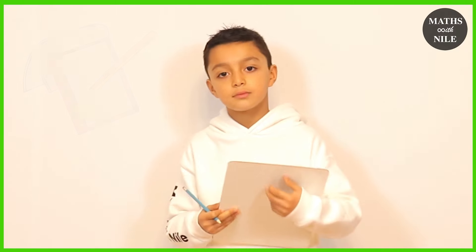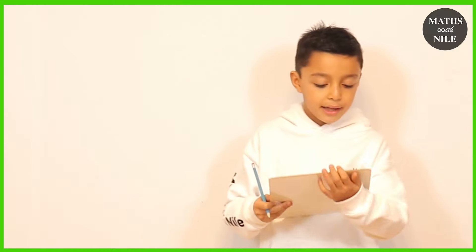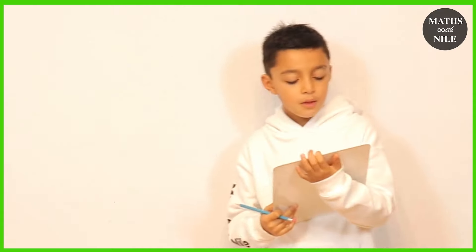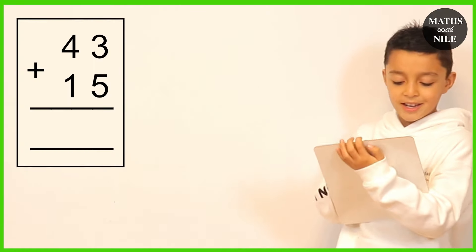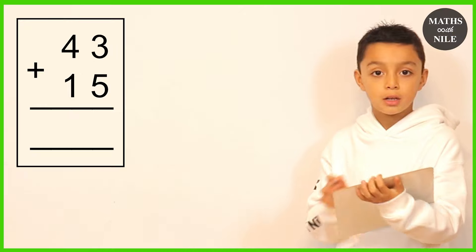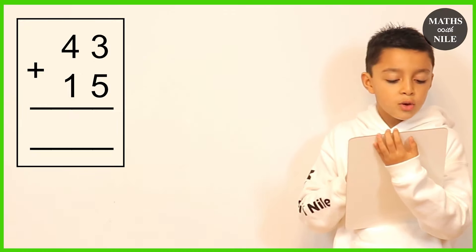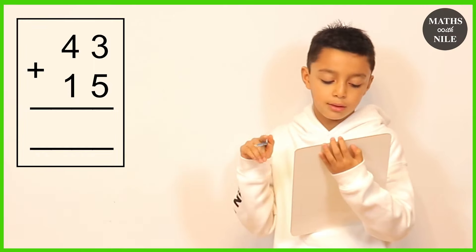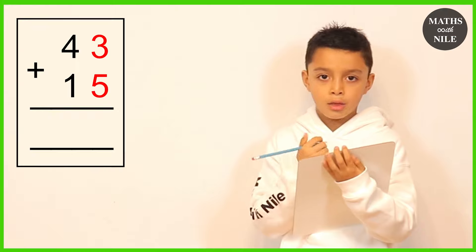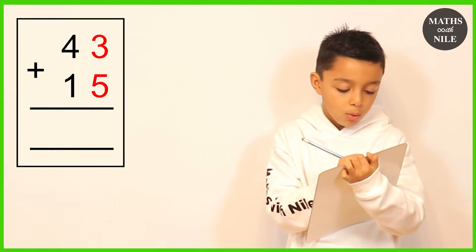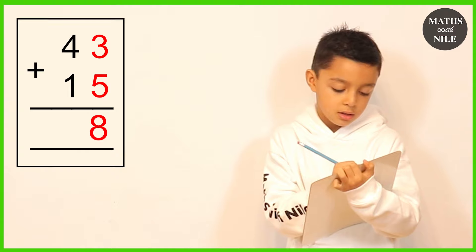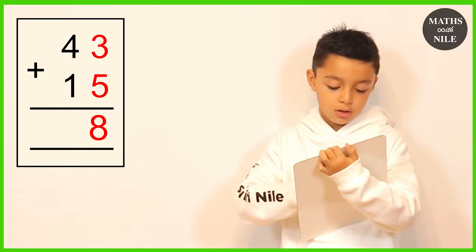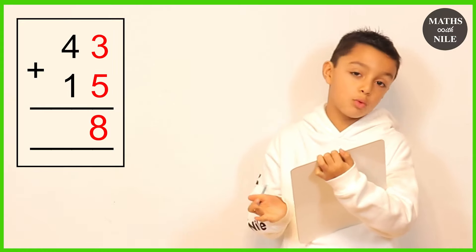So today we're learning how to add using column method. We're going to start with question number one, which is 43 plus 15. When we're doing column method addition, we always start with the units. So we do 3 plus 5, which is 8, and we put the 8 underneath the units column — or ones column.